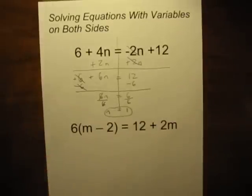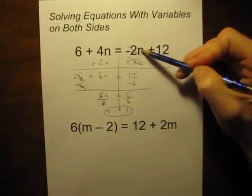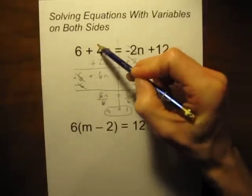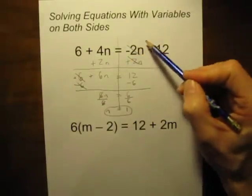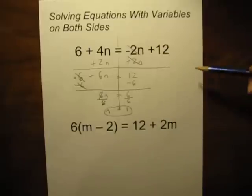If you're unsure if that's right, go ahead and put 1 in for n here, put 1 in for n here, do the multiplication and the addition here, do the multiplication and the addition here, and you should end up with the same number on both sides. It's a great way to check.